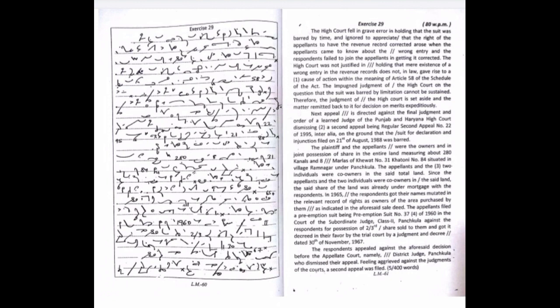Next appeal is directed against the final judgment and order of a learned judge of the Punjab and Haryana High Court dismissing a second appeal, being Regular Second Appeal No. 22 of 1995, inter alia, on the ground that the suit for declaration and injunction filed on 21st of August, 1988 was barred. The plaintiff and the appellants were the owners and in joint possession of share in the entire land measuring about 280 canals and 8 merlas of Khevat No. 31, Khatoni No. 84, situated in village Ramnagar under Panchkula.